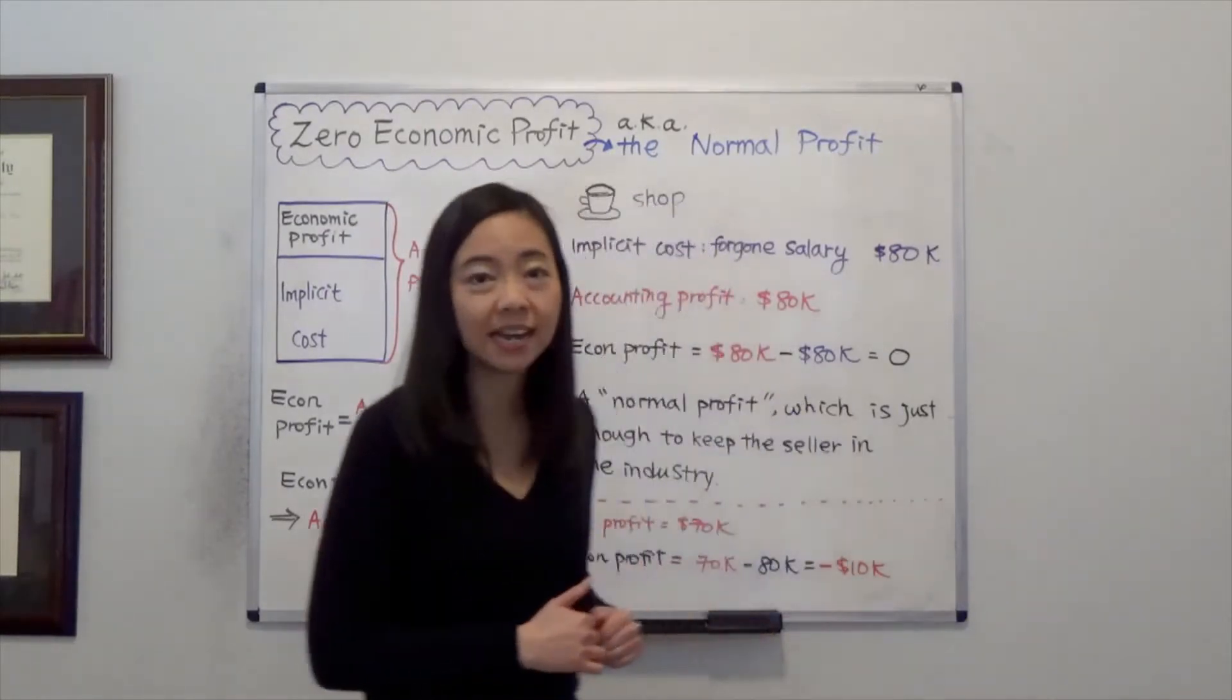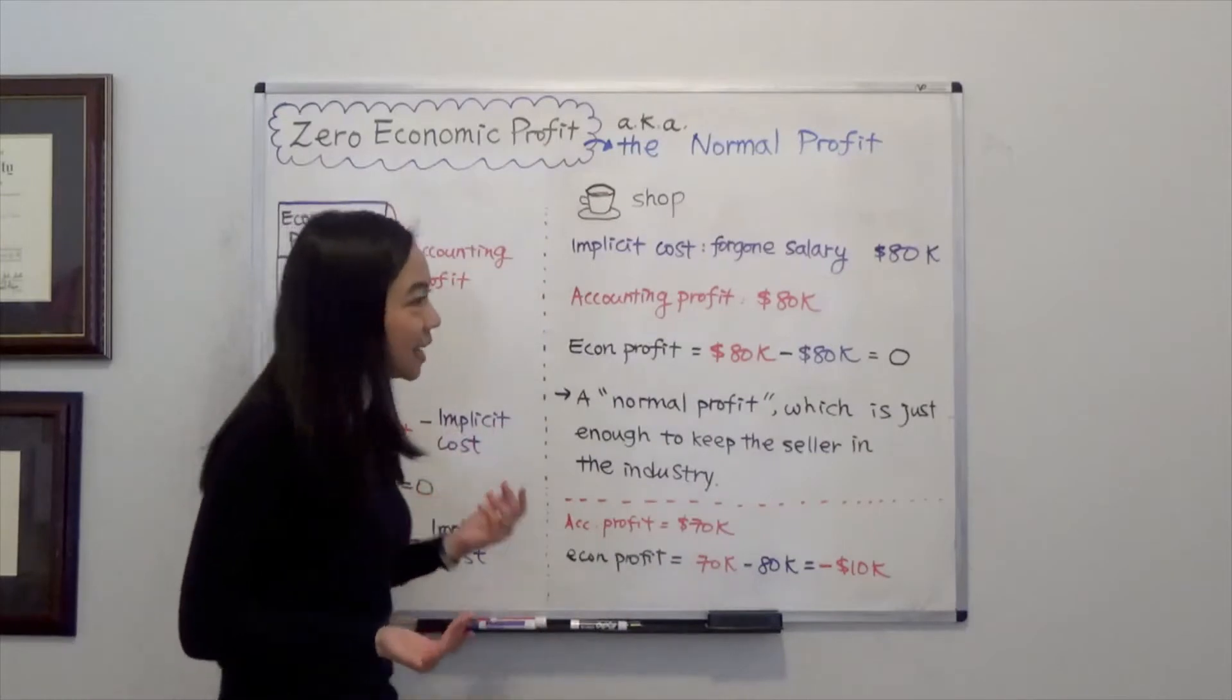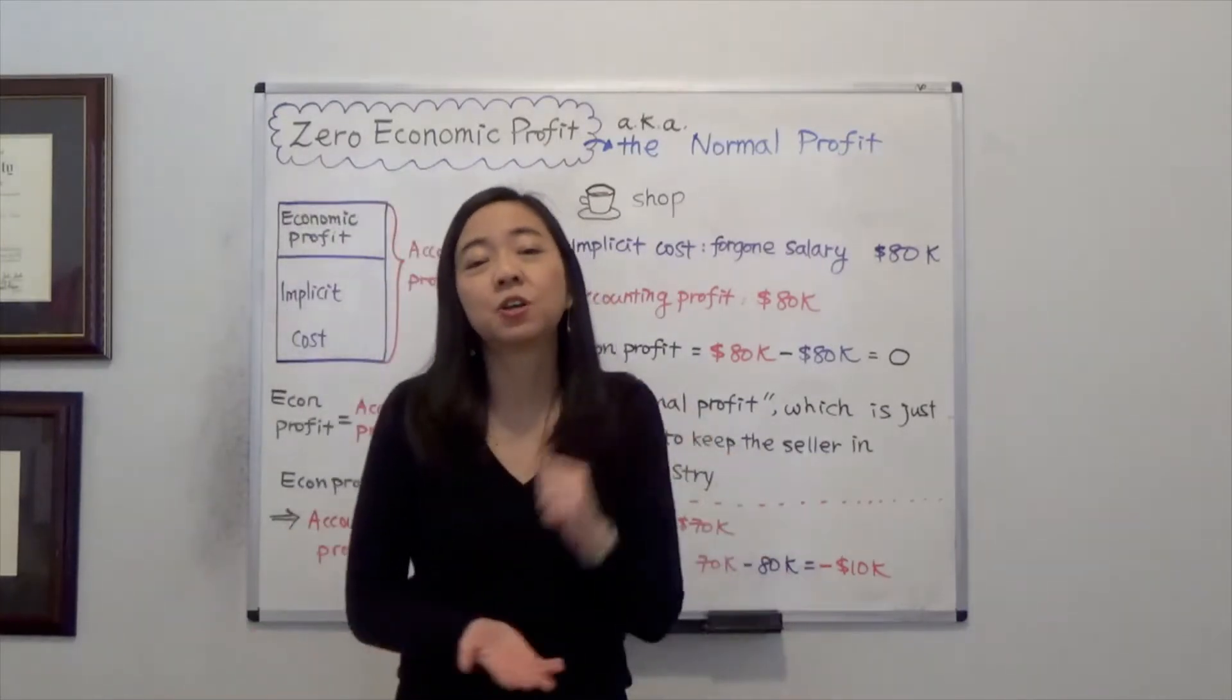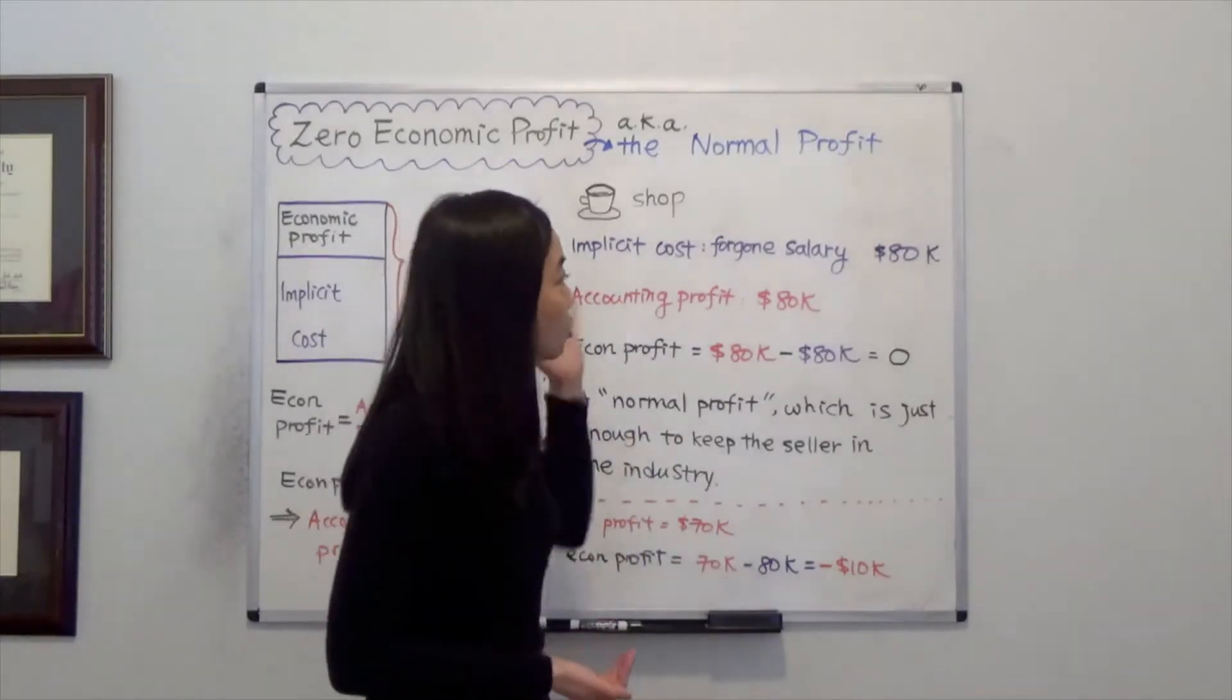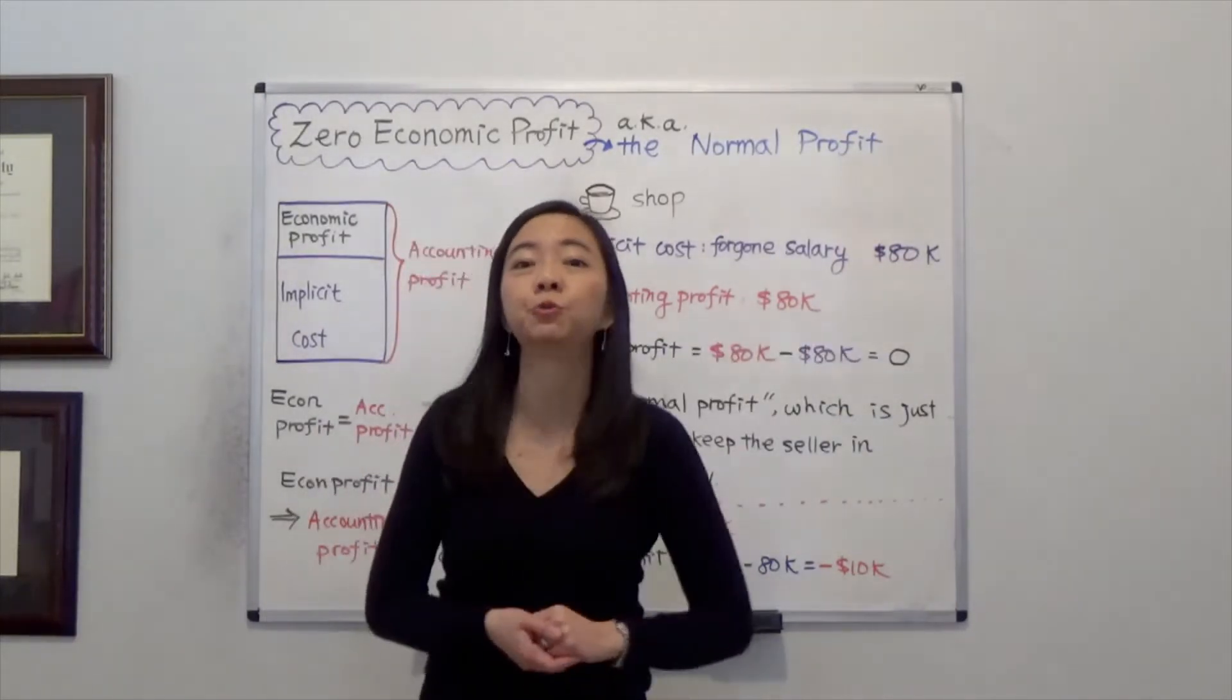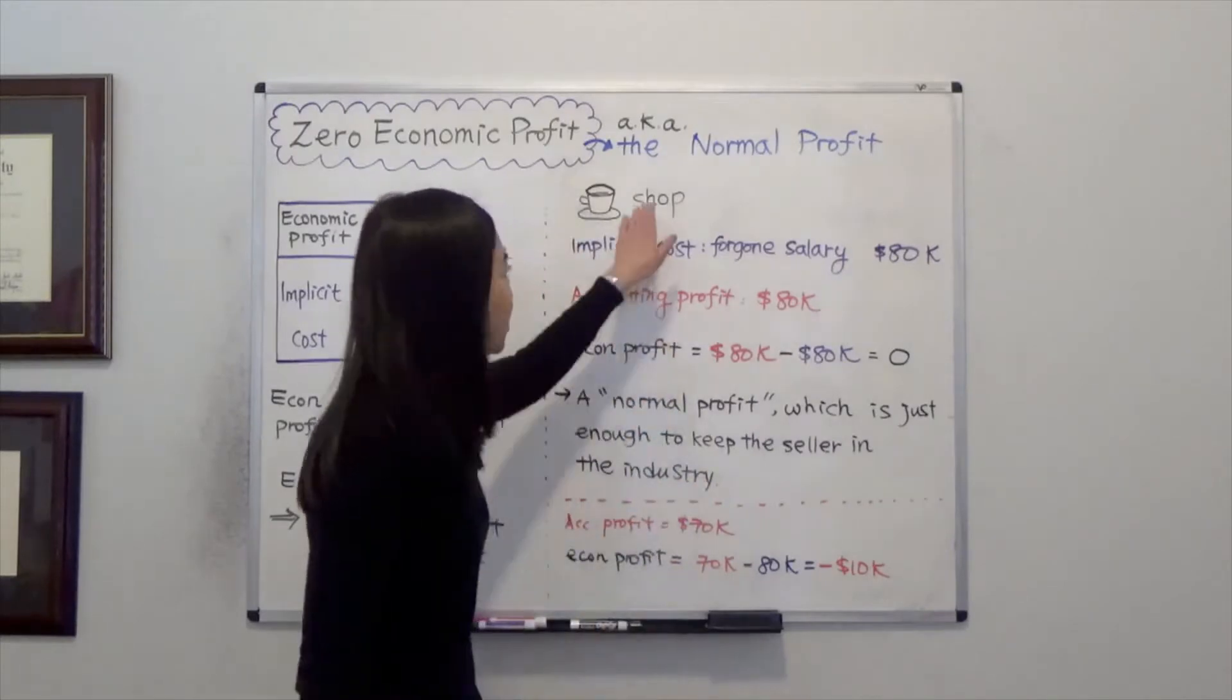Let's take a look at an example. Suppose that after you graduated, you got a job offer as an engineer, eighty thousand dollars a year, and you turn that down in order to realize your dream to operate a coffee shop.